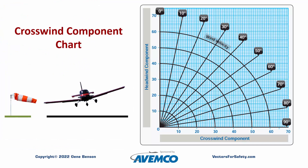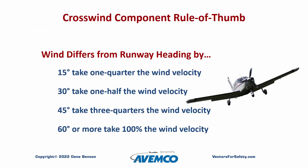Let's return to our pre-flight preparation. We should have a good idea of what to expect at any of our possible landing runways regarding the crosswind component. The wind will probably not be exactly what it was forecast, but we should be able to identify dangerous or marginal conditions before we depart. We are all familiar with this crosswind component chart. For a rule of thumb without the chart: if the wind differs from the runway heading by 15 degrees, the crosswind component is 25 percent of the wind velocity. At 30 degrees, the crosswind is half of the reported wind speed. At 45 degrees, the crosswind component is 75 percent of the overall wind speed. And when the windsock is pointing 60 degrees or more from the runway centerline, just assume the crosswind is the same as the total wind.